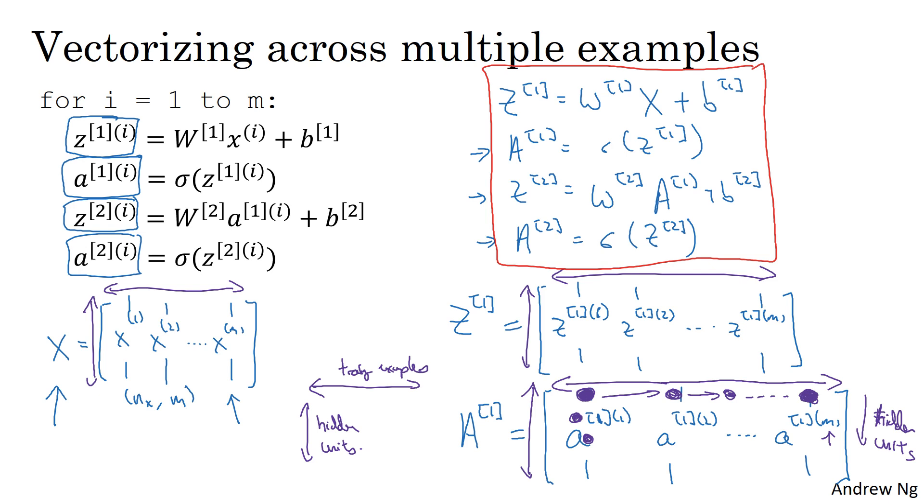So with these equations, you now know how to implement a neural network with vectorization, that is vectorization across multiple examples. In the next video, I want to show you a bit more justification about why this is a correct implementation of this type of vectorization. It turns out the justification will be similar to what you have seen for logistic regression. Let's go on to the next video.